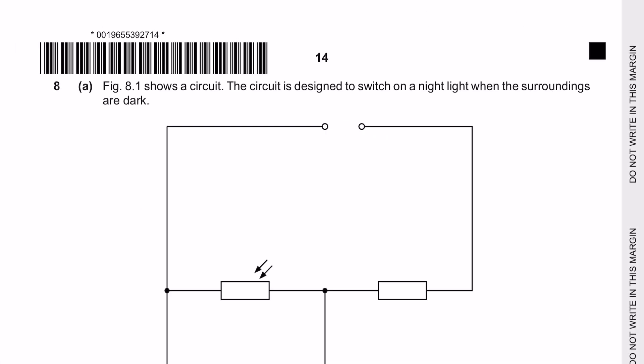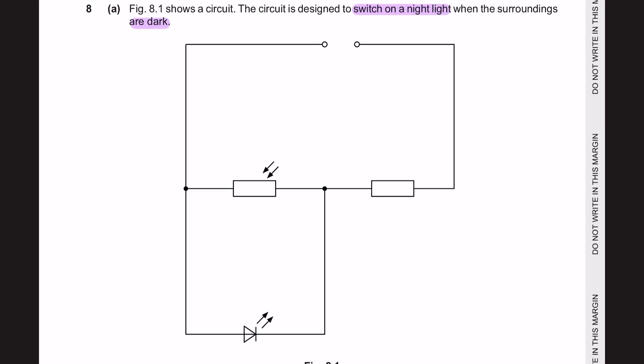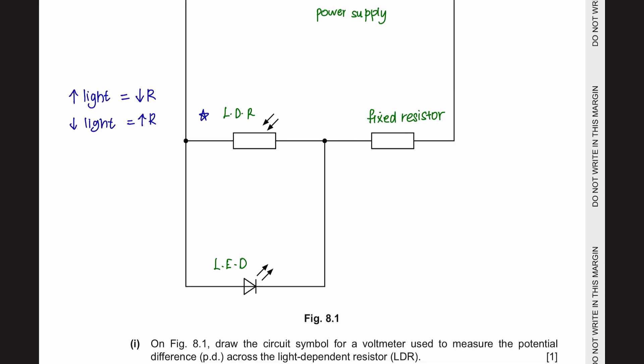Next question 8 part A. Figure 8.1 shows a circuit. The circuit is designed to switch on a night light when the surroundings are dark. Let's first identify all the components that you can see in your circuit. We have here a power supply, a fixed resistor, a light depending resistor, and a light emitting diode. Remember that a light dependent resistor changes its resistance depending on the surrounding light. If there is more light, its resistance will be low. If there is less light, its resistance will be high. However, a light emitting diode is going to produce light. LDR receive light and LED produce light. So, it's not the same thing and make sure you know the differences.